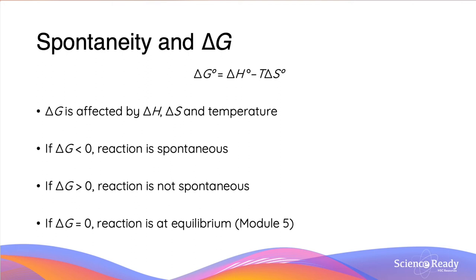Now let's look at our final scenario, where delta G equals zero. If we have one favourable driver and one unfavourable driver, we are going to get a delta G that equals zero at some certain temperature, such that T delta S equals the negative of delta H. This is going to be a phenomenon called equilibrium, which we will discuss in module 5.